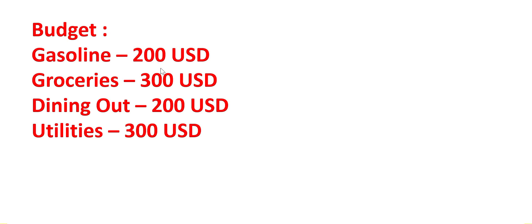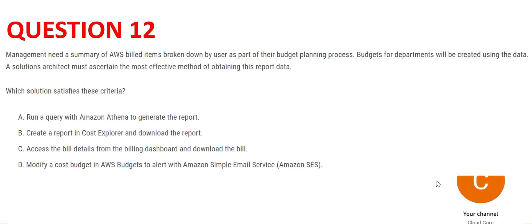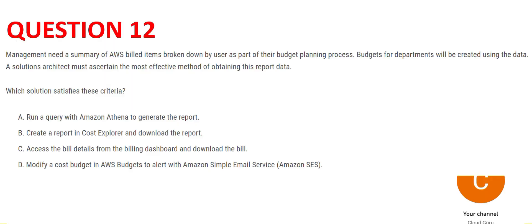To know whether a budget line like gasoline at $200 is appropriate, you would look at the previous month's expenses — how much you spent on gasoline, groceries, and so on. The same thing is happening in this question: we are creating a budget by looking at the previous month's bill, and this bill needs to be broken down by user, showing how much each user spent.